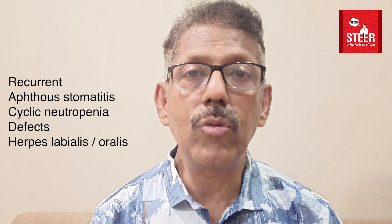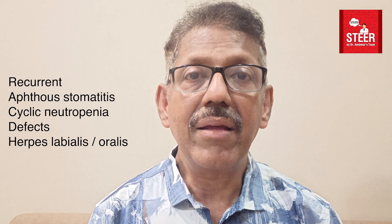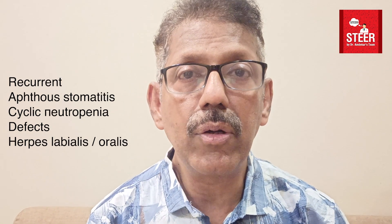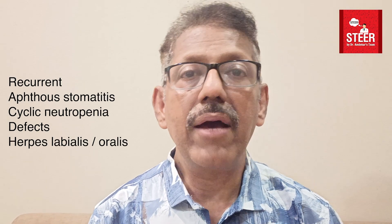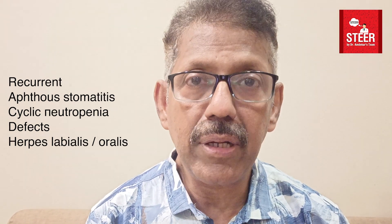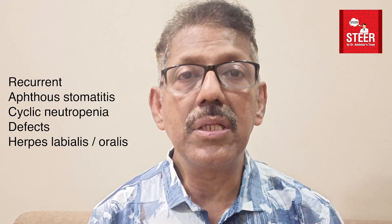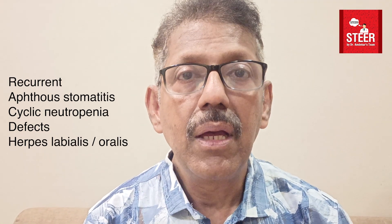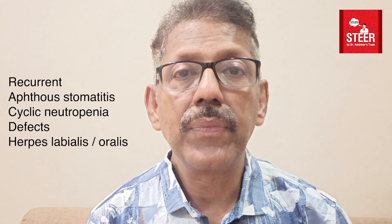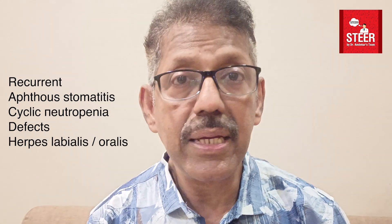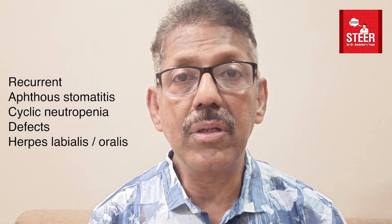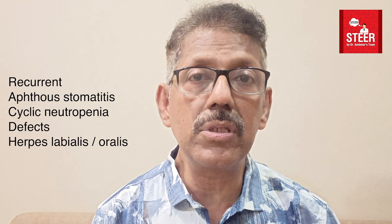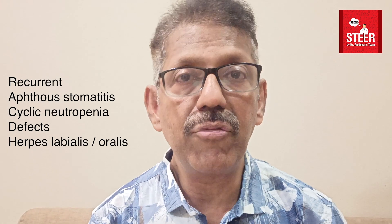In recurrent ulcers, the recurrent aphthous ulcer is the commonest, appearing beyond 10 years of age and decreasing in intensity and frequency as one grows. There are minor, major, and herpetiform varieties. The next category is cyclic neutropenia, which causes recurrent ulcers. Recurrent ulcers also occur with Behçet's disease and with herpetic lesions on the labia — herpes oralis in immunodeficient individuals.